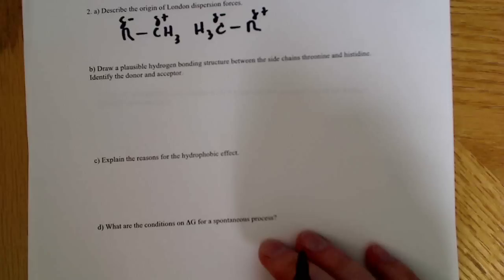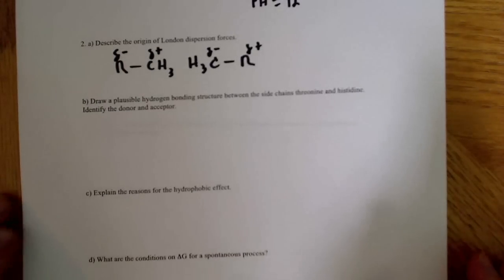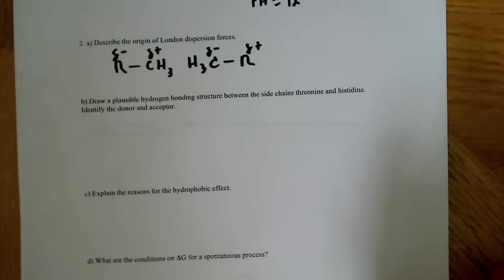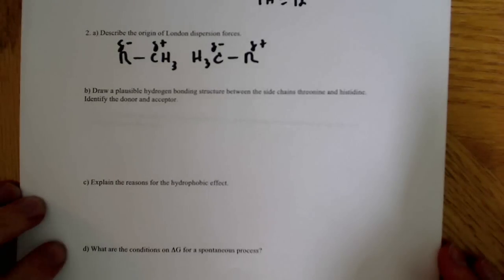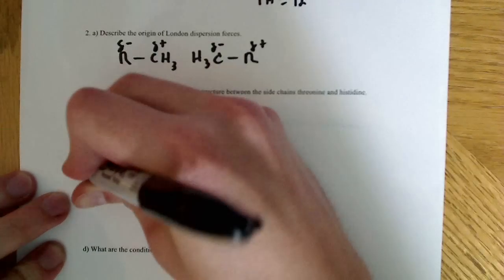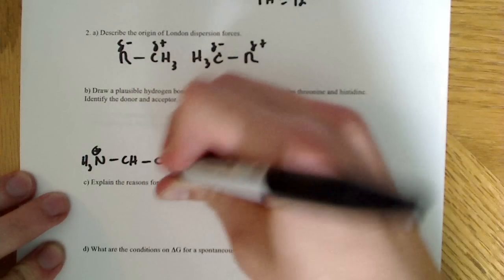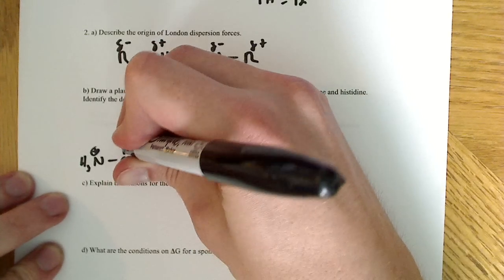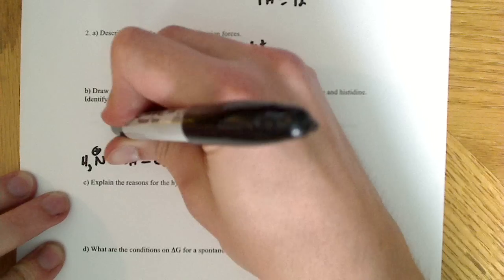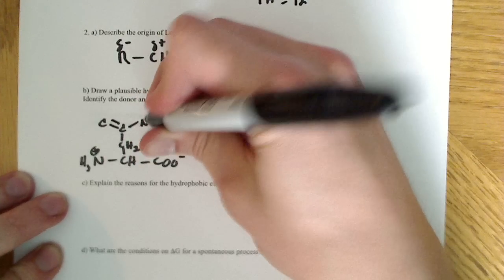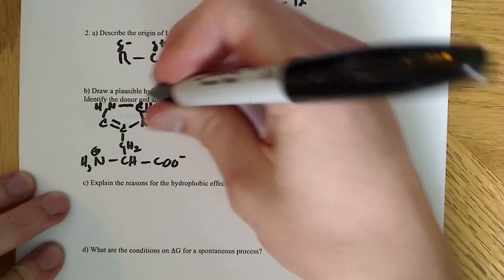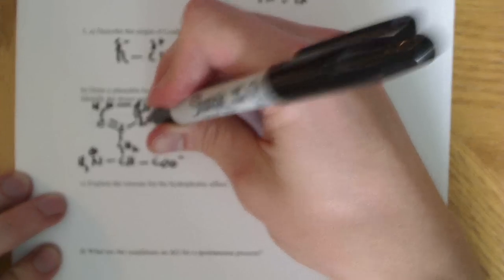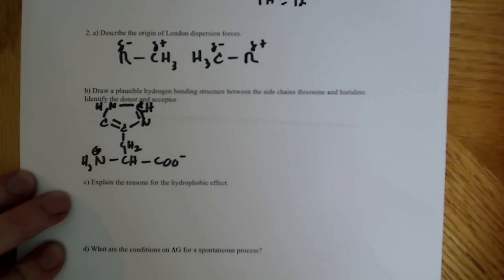This one's good as well. I think this is worth looking at. It says draw a plausible hydrogen bonding structure between the side chains theranine and histidine. Identify the donor and acceptor. This is good for what we've been covering here. It's another amino acid problem. Let's start drawing it. So I have NH3 plus CHCOO minus. And I'm going to draw my histidine first. That's CH2. This is a C, this is a C, it's a double bond here. This is another nitrogen here. We have a nitrogen up here that also has a hydrogen attached to it. Another carbon up here, CH, and that's attached like that. And there's a double bond between the CH and the N here. So that is the structure of histidine.